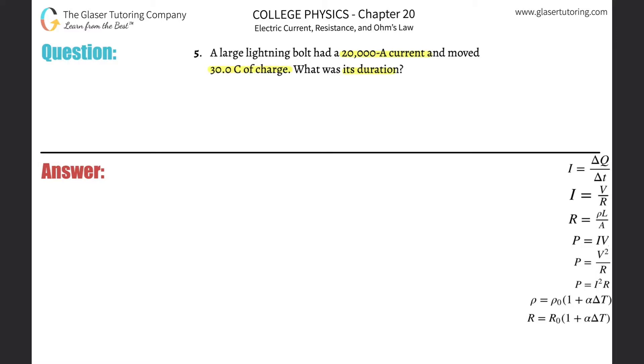All right, so we know the current is 20,000 amps. Remember, the unit of amp is really the same thing as saying a coulomb per second. A coulomb represents the amount of charge.